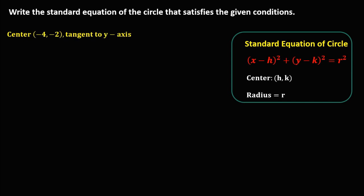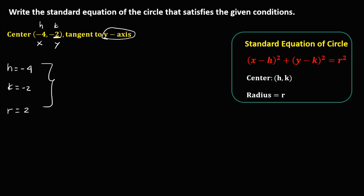For this given, the center is negative 4 and negative 2, so h is negative 4 and k is negative 2. Since the circle is tangent to the y-axis, the radius is equal to positive 2 — the radius is always positive. Now write the standard equation of the circle using this formula. Since h is negative 4, this becomes positive 4, to the power 2.